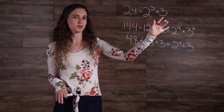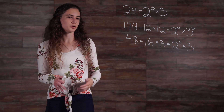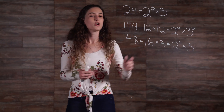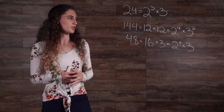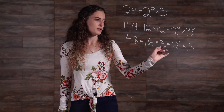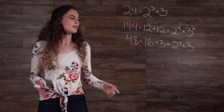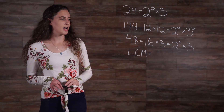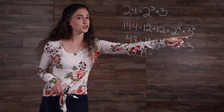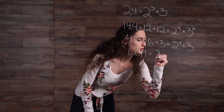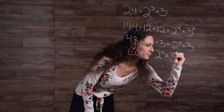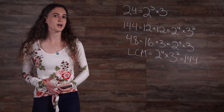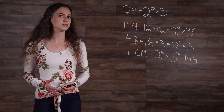Let's find the LCM of 24, 144, and 48 by factoring. 24 equals 2 cubed times 3, so the prime factors of 24 are 2 and 3. 144 equals 2 to the 4th times 3 squared, so the prime factors are also 2 and 3. 48 equals 2 to the 4th times 3, so the prime factors of 48 are also 2 and 3. The unique factors are 2 and 3; the highest power of 2 is 4, and the highest power of 3 is 2. So the LCM equals 2 to the 4th times 3 squared, which equals 144. Since 144 is a multiple of both 24 and 48, it is also automatically the LCM of all three numbers.